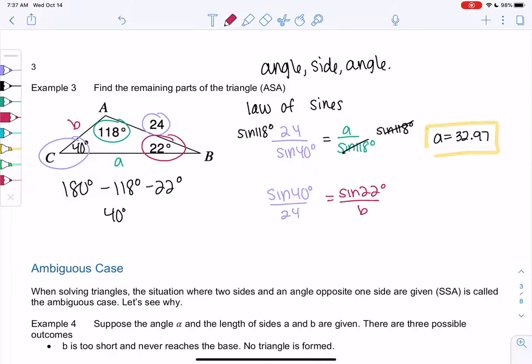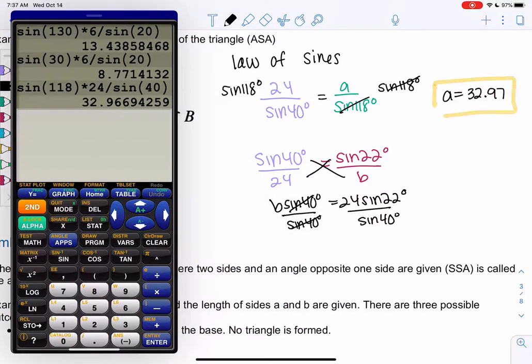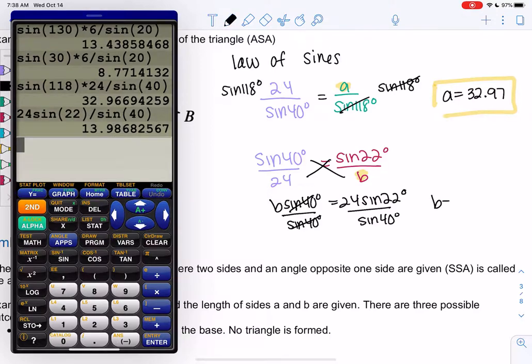It does still work. The reason I'm not doing this is it's more work - we have to cross multiply now since B is on the bottom. So B sine of 40 equals 24 times sine of 22, then divide by sine of 40. You get the same answer either way, but we had to do an extra step. You technically can write it either way. I usually try to think about what I'm solving for and put that on top. If I were solving for an angle, I would prefer sine on top. So 24 times sine of 22 divided by sine of 40, and B equals 13.99.